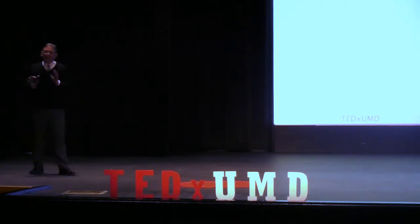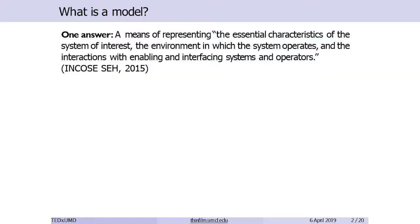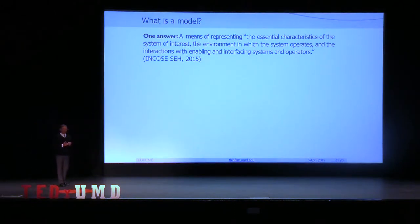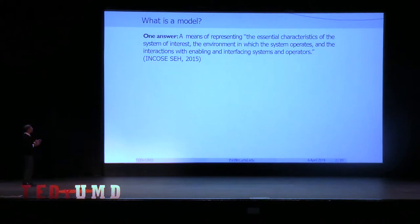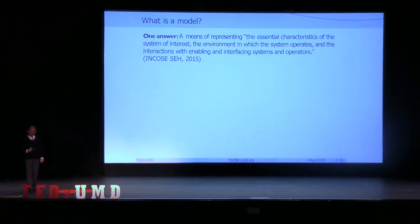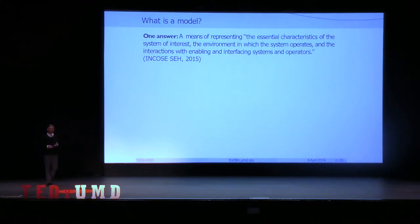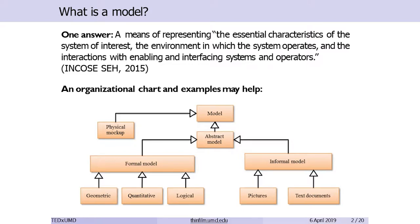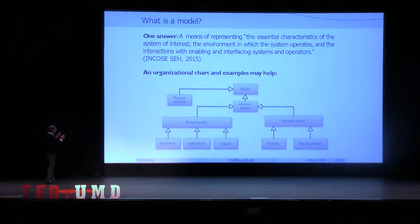To begin the talk, let's consider what the definition of a model is. We can turn to the systems engineering community and look at the definition put together by a committee of systems engineers: a model is a means of representing the essential characteristics of the system of interest, the environment in which the system operates, and the interactions with enabling and interfacing systems and operators. While this is a good and precise definition, it's not really constructive in terms of understanding examples of models and how we use them to perform design. A better approach is to look at an organizational chart of modeling.